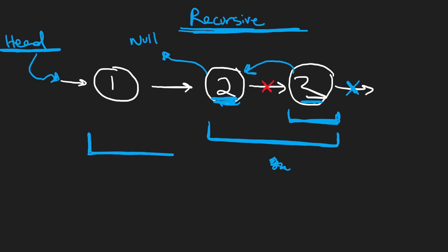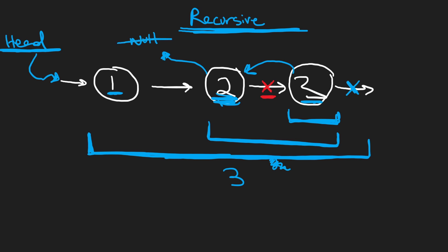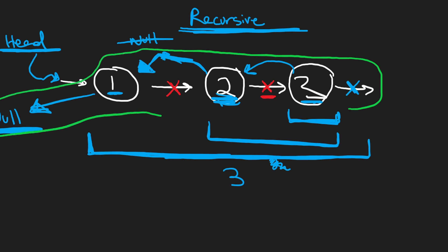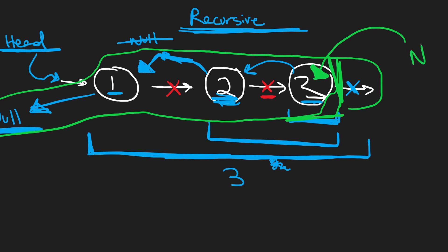Now we're finally at the last call. Our sub-problem is to reverse these three nodes, and we can repeat the same thing we did before. For node one, since one has access to two, we're going to set two's next pointer — instead of null, we're going to set it to one. And the next pointer of one is now going to be null because we've reached the end. This is going to be the new end of our linked list. So we've done our job — we recursively took our linked list and reversed it. The only issue is that in our code, we're going to have to maintain the last node as the new head.